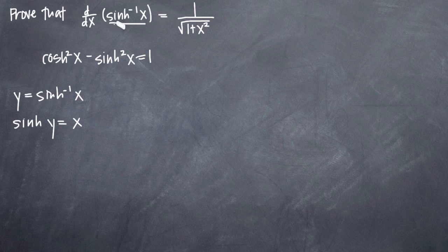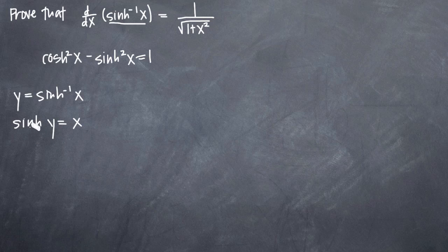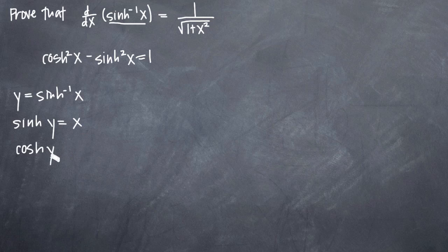Remember that we're driving toward the derivative of inverse hyperbolic sine, so we want to take the derivative of what we've got with respect to x. This is going to be implicit differentiation — we take the derivative of both sides with respect to x. Taking the derivative of the left-hand side, recall that the derivative of hyperbolic sine is hyperbolic cosine, so we get hyperbolic cosine of y. Because we're using implicit differentiation with respect to x, we have to use the chain rule.